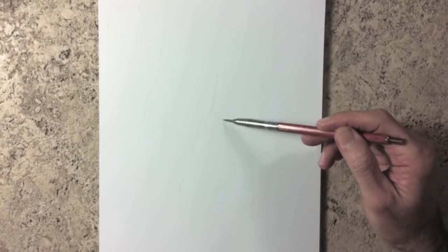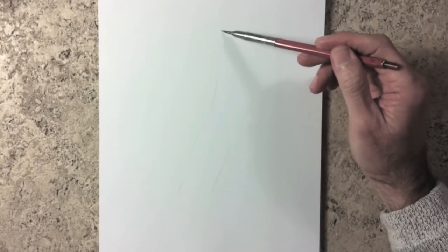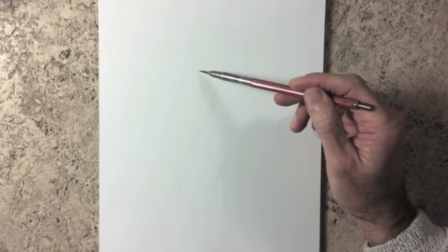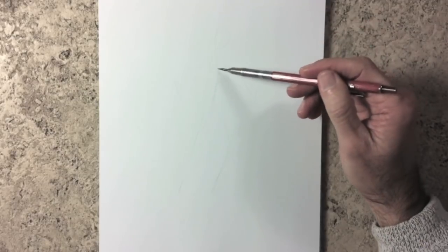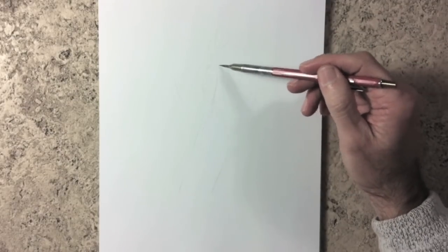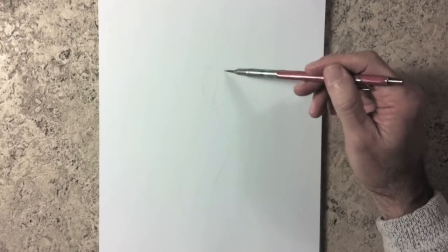We start with the mood line, showing the movement and character of the person. You probably noticed that the last time I didn't start with a mood line, I went directly to the skeleton. There is no rule about it, but the mood line is usually helpful.